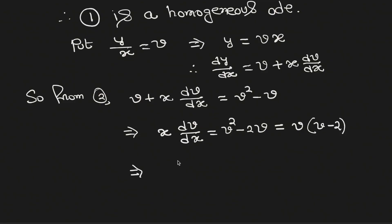We can rewrite this equation as dv/(v(v-2)) equals dx/x.